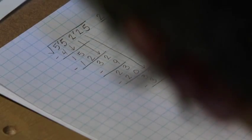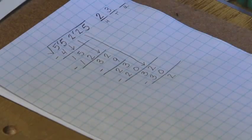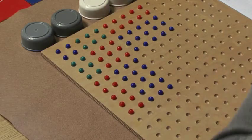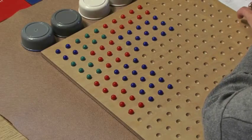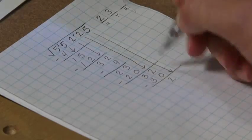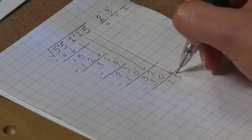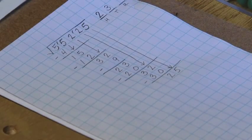For each 10 bead, I will get 10 unit beads. If I bring down my unit's place, which is 5, and I add that to the unit beads that I've placed in the cup from the exchange, I have 25 unit beads.